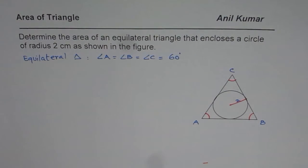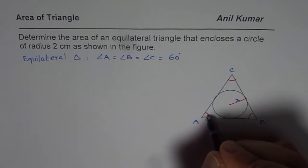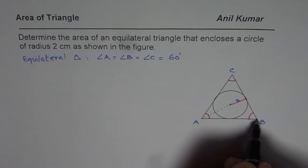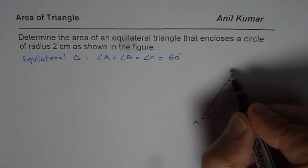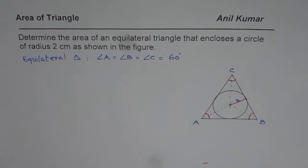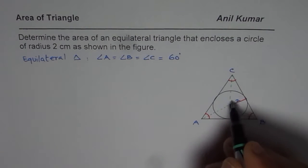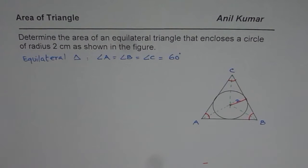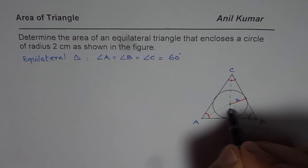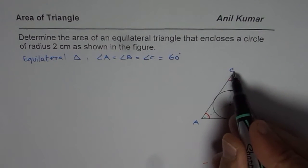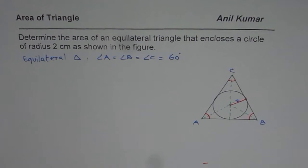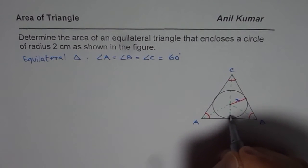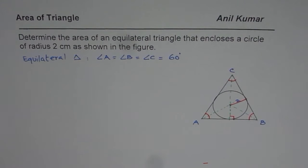Since we have a circle inscribed within this triangle, if we draw the angle bisectors of these angles, they are going to intersect at the center of the incircle. Now, let me extend this angle bisector to side AB — and as we can see from the symmetry, that will also be the altitude of the triangle.